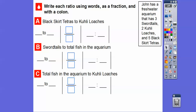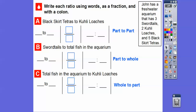Write each ratio using words, as a fraction, and with a colon. The black skirt tetras — there were five — to the kuhli loaches, which is two. So five tetras for each kuhli loach. We're going to write five to two. As a fraction, five over two, and then as a colon, five to two.